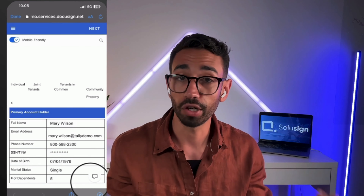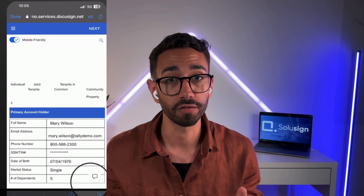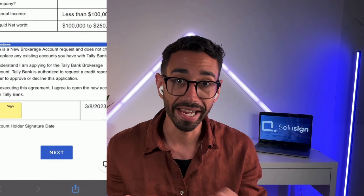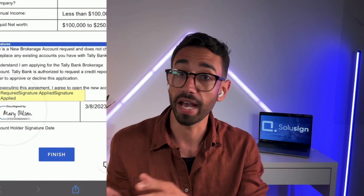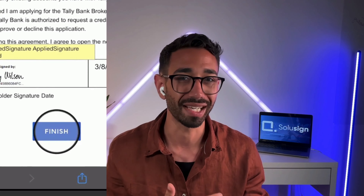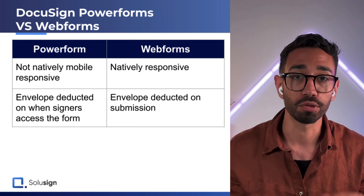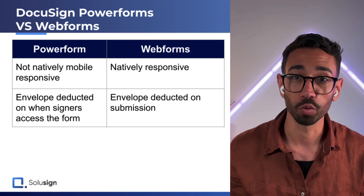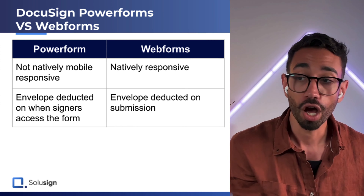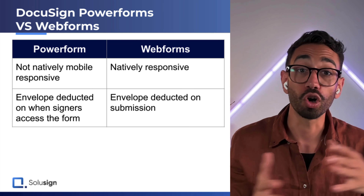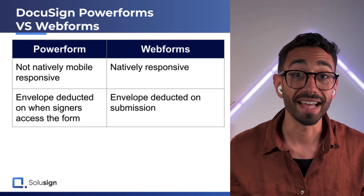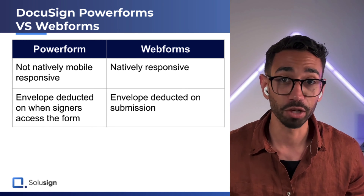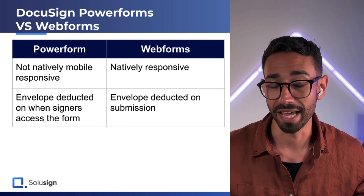Once the signer has completed filling out all the form fields of the webform, they will see the underlying document and sign that PDF as usual — the typical DocuSign signing experience. The other main difference is that webforms only deduct one envelope after the user submits the form, unlike PowerForms, which are deducted from your envelope account as soon as the signer accesses the form. This definitely gives webforms an edge.